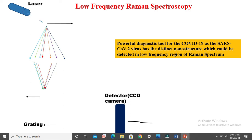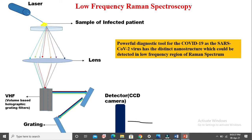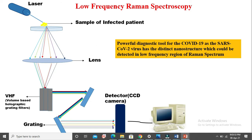A laser is illuminated on the sample of the infected person, which gets split into different frequencies. It then passes through a lens which converts the light, and then passes through a grating filter which combines it into a single frequency, leading to splitting of the light at different frequencies that can be detected by a camera connected to a PC, which provides the Raman spectrum.